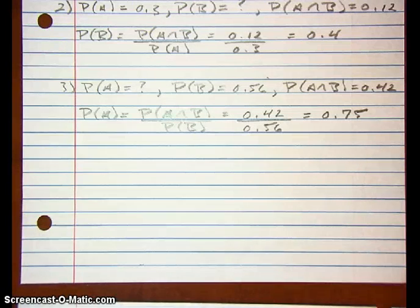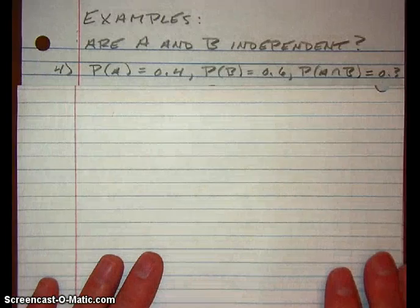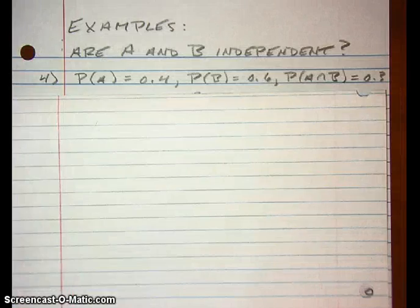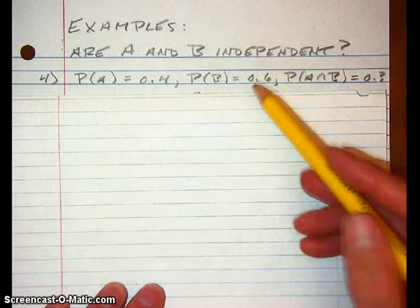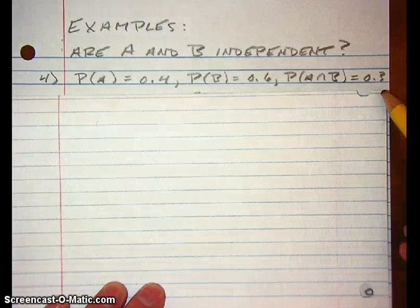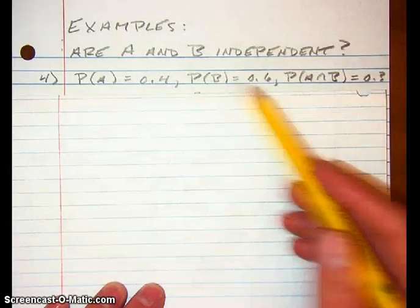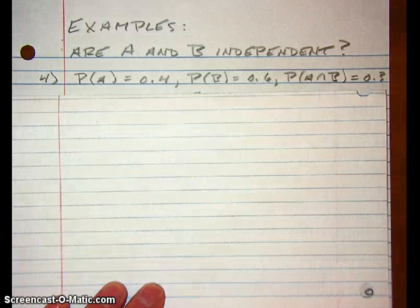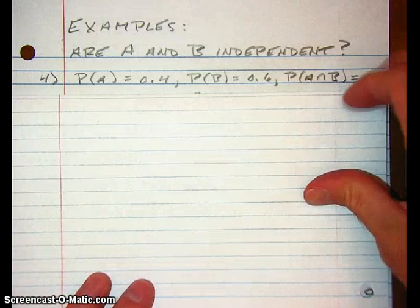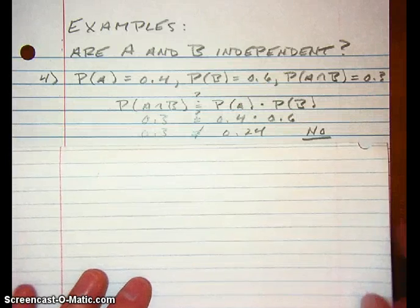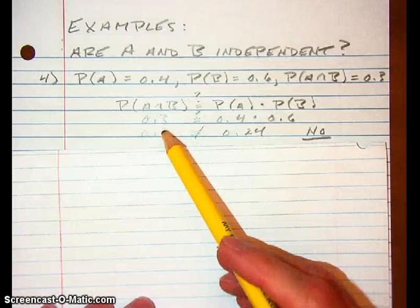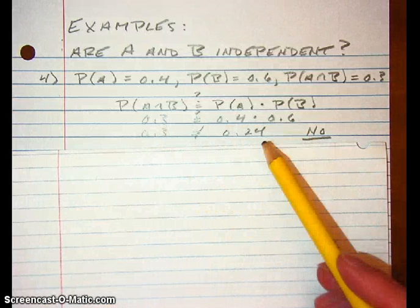It's an easy rule to use if you know your two events are independent. You can also use this rule to determine if two events are independent by checking if the rule holds for the given probabilities. If we have the probability of A as 0.4, probability of B as 0.6, and probability of A and B as 0.3, we multiply 0.4 times 0.6 to get 0.24. Since 0.24 is not equal to 0.3, those are not independent events.